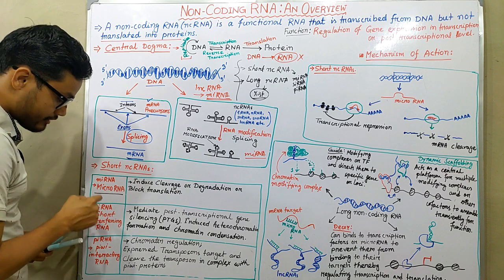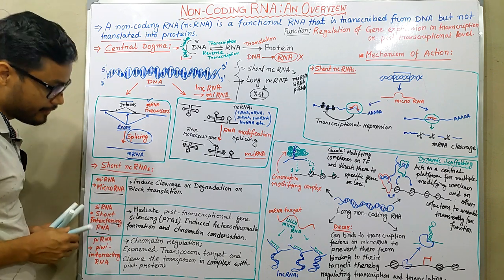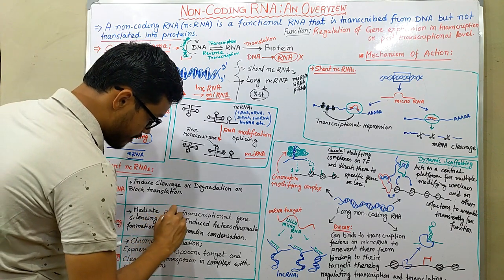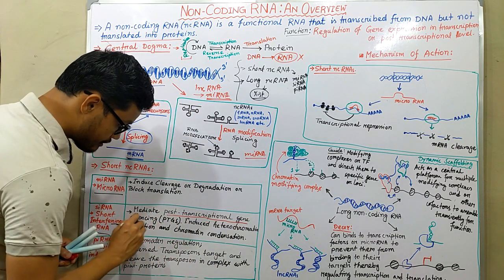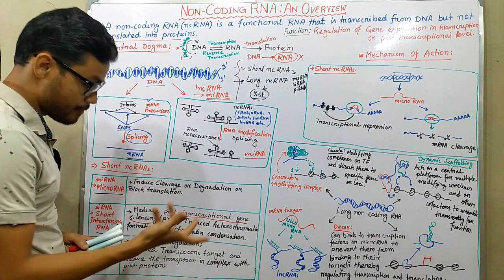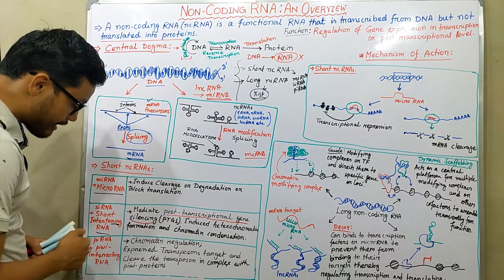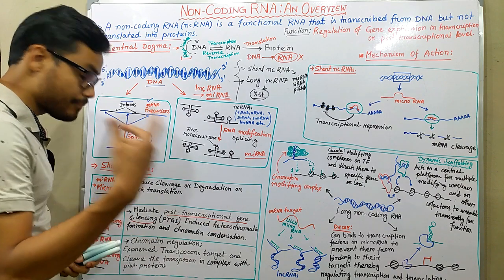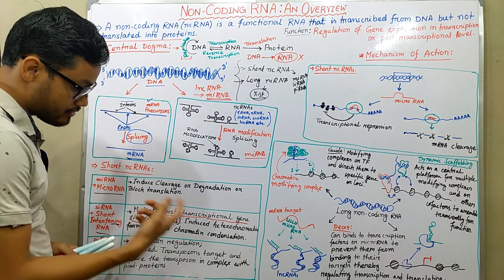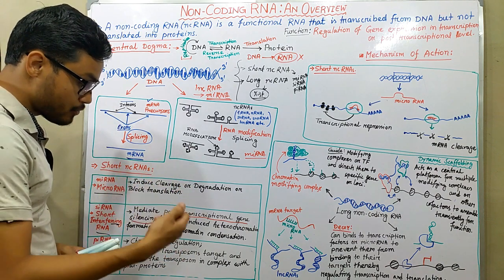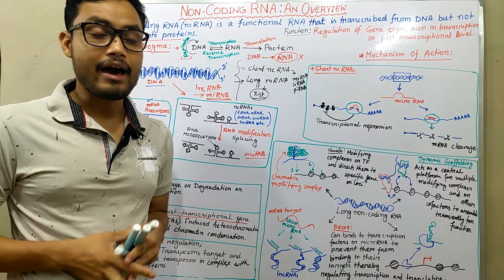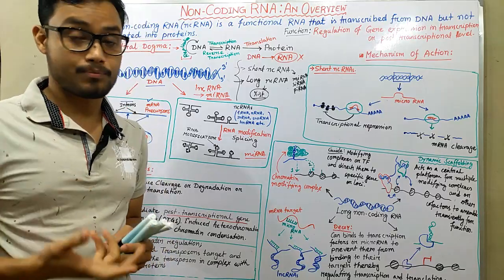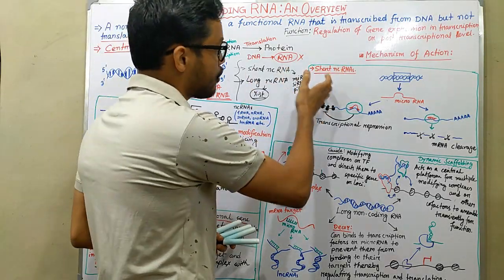The next short ncRNA is siRNA — small interfering RNA. The mechanism of siRNA is to mediate post-transcriptional gene silencing, along with inducing heterochromatin formation and chromatin condensation. The next is piRNA — PIWI-interacting RNA — whose main functions are chromatin regulation and targeting and cleaving transposons in complex with the PIWI protein. When piRNA forms a complex with the PIWI protein, it cleaves the specific transcript or transposon.